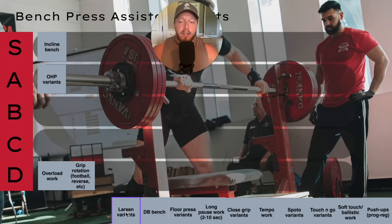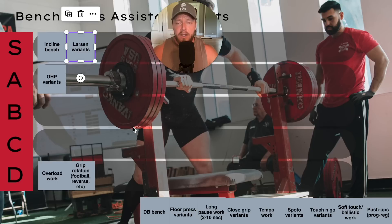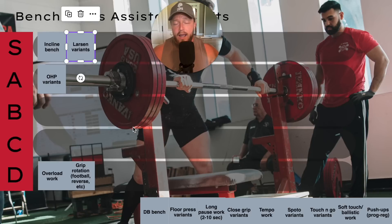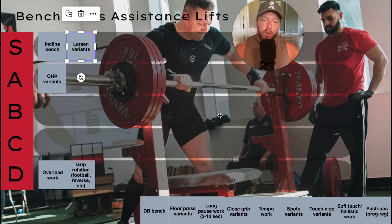Larson variants — going straight to S tier. I don't think I need to explain why — everyone knows Larson press is amazing. I specifically like soft touch Larson press, especially for touch-and-go benchers, but literally for anyone. Larson press teaches good scapular control because you have to have a lot of active scapular retraction, especially with a soft touch — which is why I always have my athletes soft touch on Larson press, otherwise you lose a lot of the scapular stability benefits. It literally teaches you to engage your upper back correctly without relying on a forced arch via leg drive.